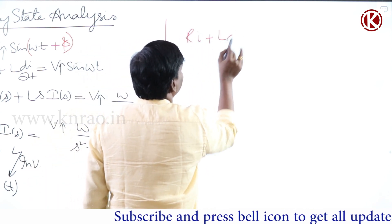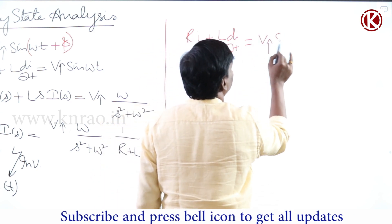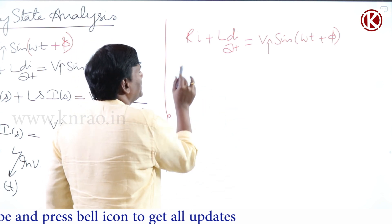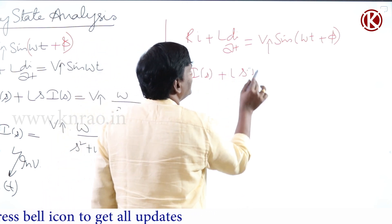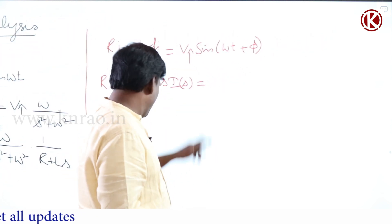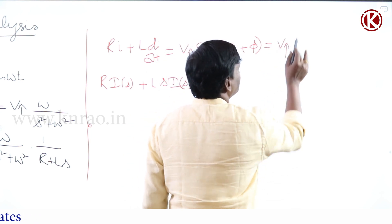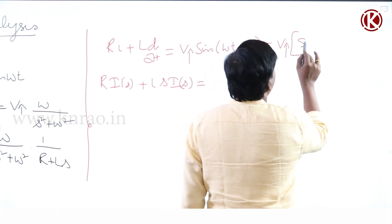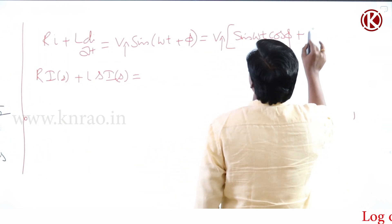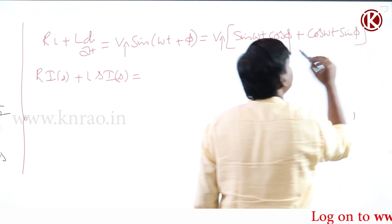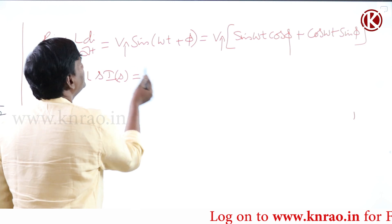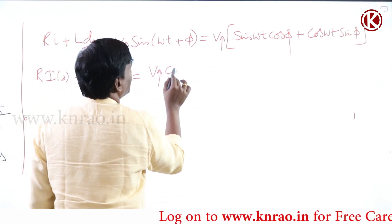Under that condition, the KVL equation becomes: R·i + L·(di/dt) = V_max·sine(ωt + π). To apply the Laplace transform, you first expand sine(ωt + π) using the sine addition formula: sine(A+B) = sine(A)cos(B) + cos(A)sine(B), giving V_max·[sine(ωt)·cos(π) + cos(ωt)·sine(π)]. If you understand how difficult this is getting, then we will truly appreciate the phasor approach.